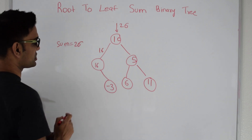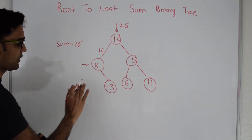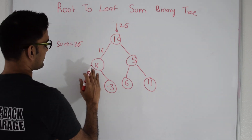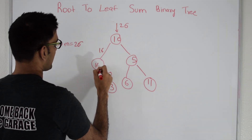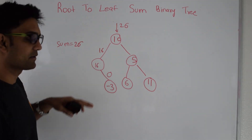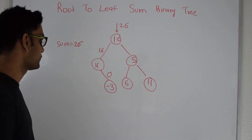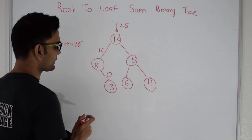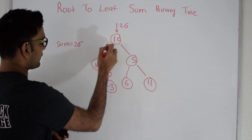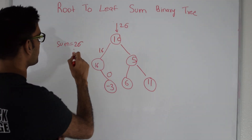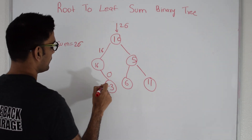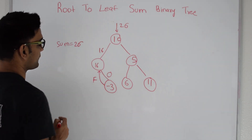Node 16 checks if it is a leaf or not — it is not, and it has no left child. But it does have a right child, so it passes 16 minus 16, which is 0, down to the right. Now this right child is a leaf, but the value at that leaf is not the same as 0, so this root-to-leaf path does not sum to 26. Otherwise the value would have been equal.